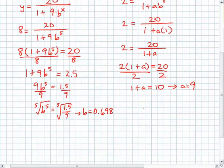My function then would be y = 20/(1 + 9(0.698)^x).